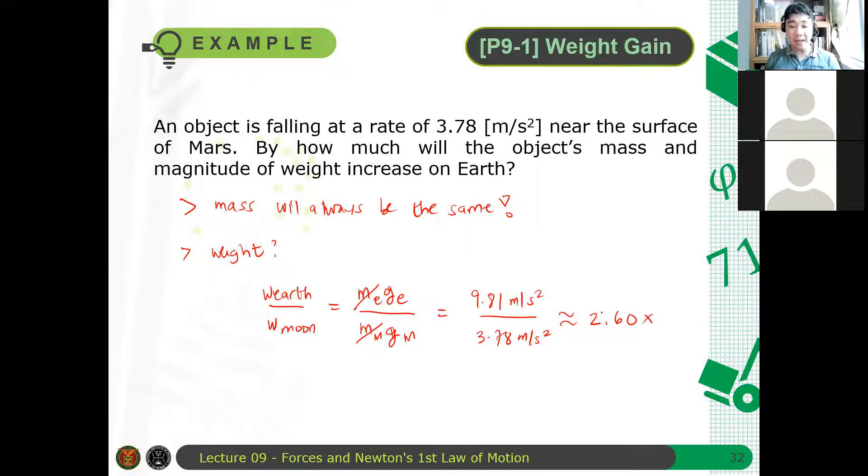Therefore, the weight for an object... Ay, ba't moon to Mars? Mars pa lang to, sorry. Mars. M pa rin naman. Sorry for that. This should be Mars. So, this is Mars. Okay, so the weight in Mars is 3.7, will be... so the weight at Earth will be 2.6 times the weight at Mars for the same object. So, this is the answer, 2.6 times.